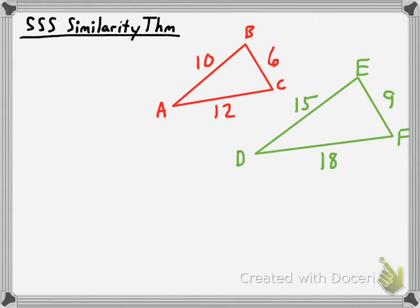Just generally speaking, remember that similar figures have to have all their corresponding sides be proportional to one another and all their corresponding angles have to be congruent. But with triangles, it turns out you can just use the sides or just use the angles to prove that they are similar to one another. We've learned how to use the angles; now the SSS similarity theorem is going to help us use the sides only, without knowing the angle measures, to prove that two triangles are similar.